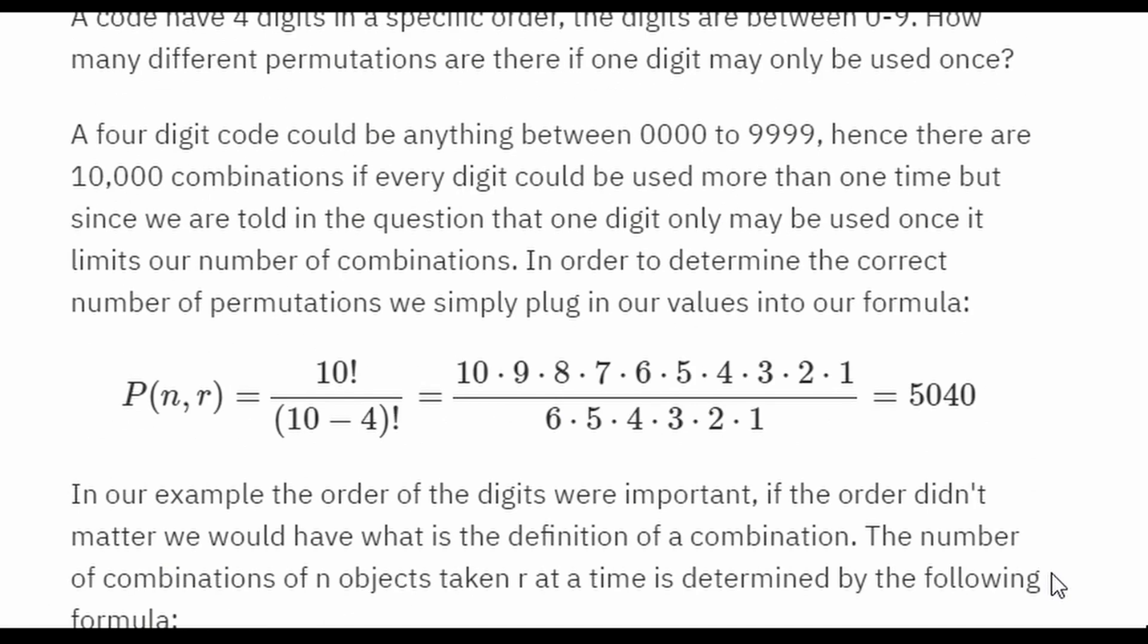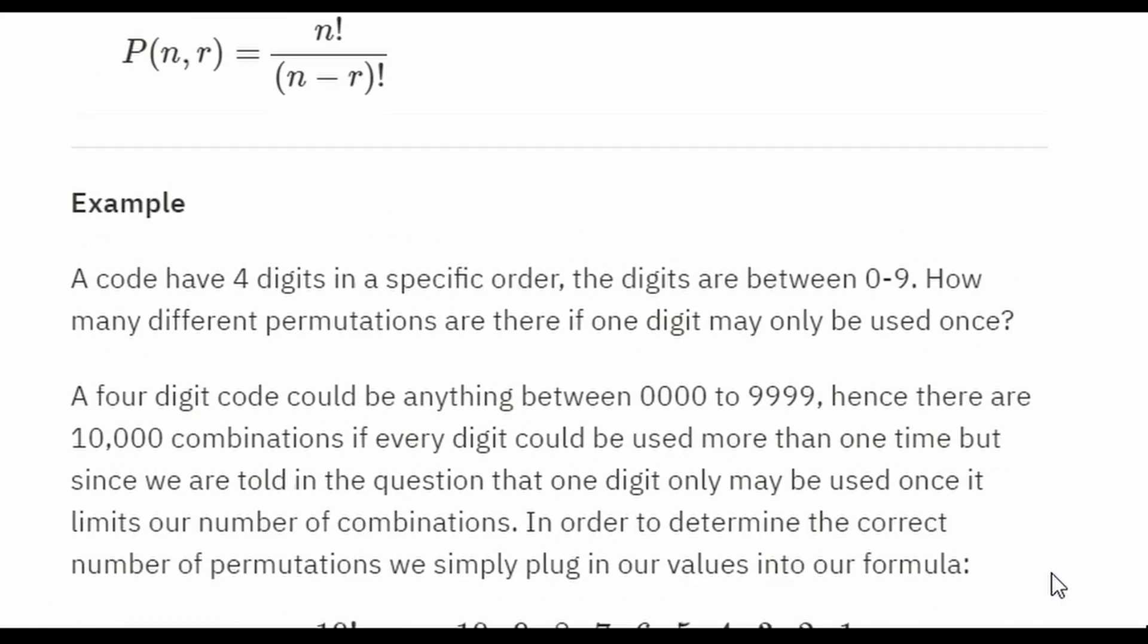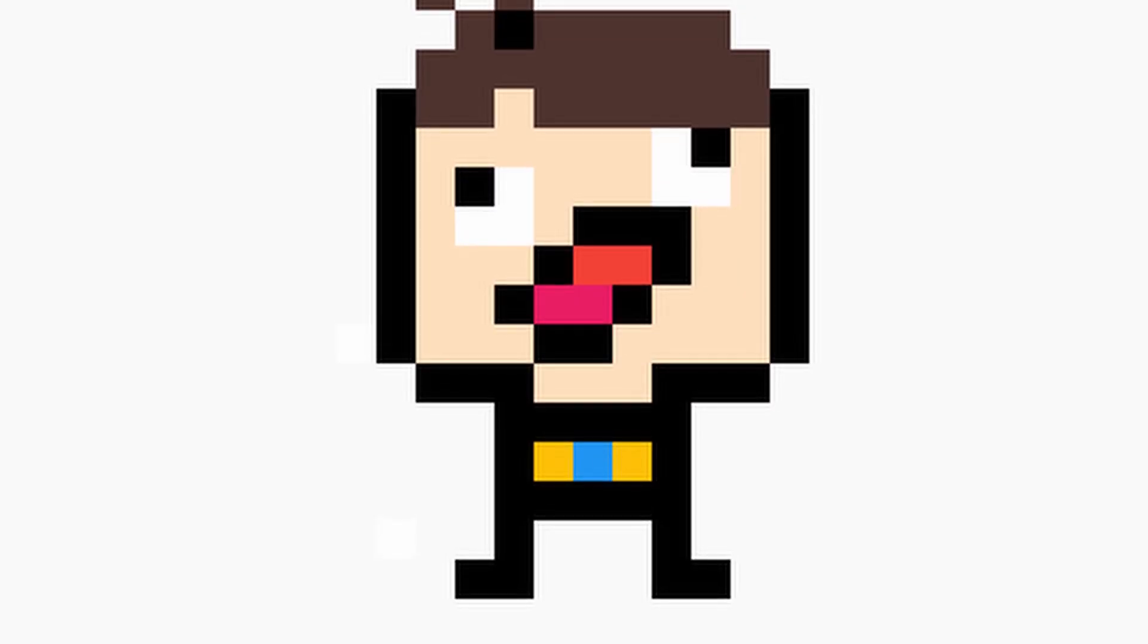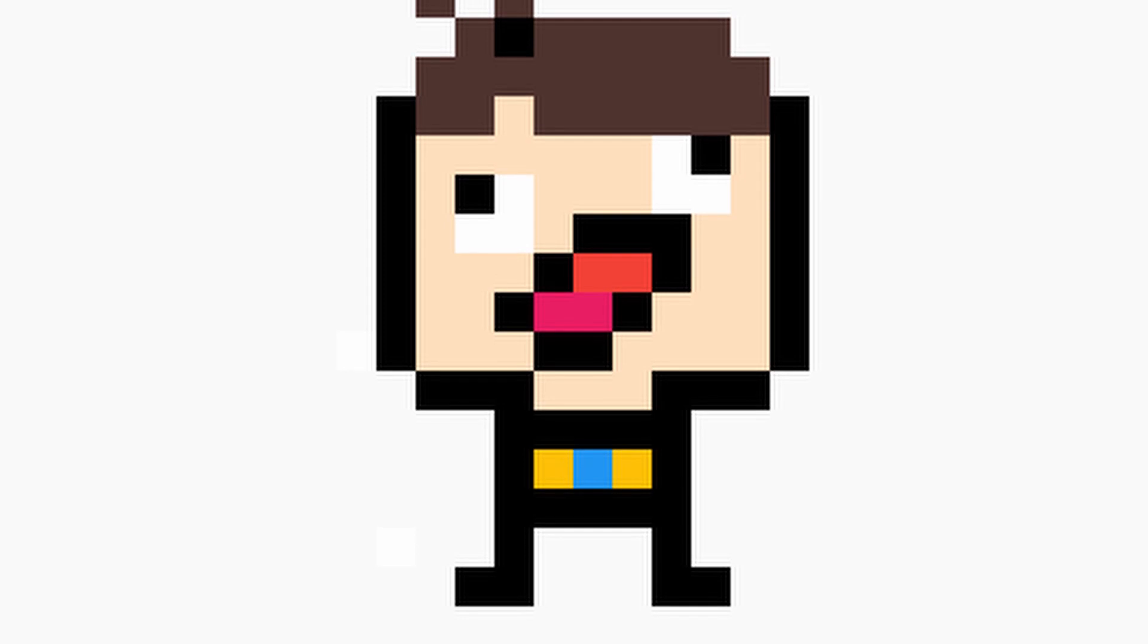Permutations, on the other hand, have an order. They're more like, ironically enough, a combination lock. Not only do you have to get the right numbers, but also the right order. And that's what a permutation is.